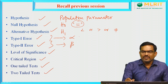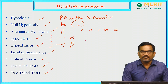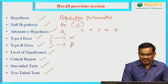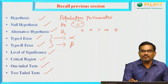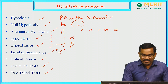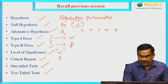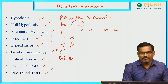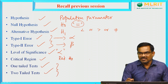Type 1 error involves the rejection of H naught even when it is true, and type 2 error involves the acceptance of H naught even when it is false. The level of significance is the probability of committing type 1 error, hence it is denoted by alpha. The critical region is the region in which we reject the null hypothesis. Based on this critical region, the tests are divided into two types: one-tailed and two-tailed tests.